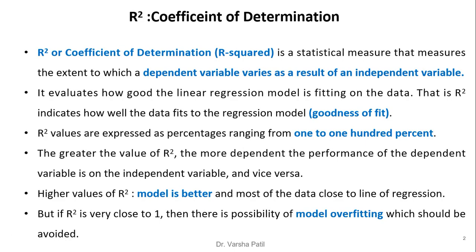R-squared, or coefficient of determination, is a statistical measure that measures the extent to which the dependent variable varies as a result of an independent variable. It evaluates how good the linear regression model is fitting on the data — that is, R-squared indicates how well the data fits to the regression model, which is nothing but goodness of fit. R-squared values are expressed as a percentage ranging from 0 to 100 percent.